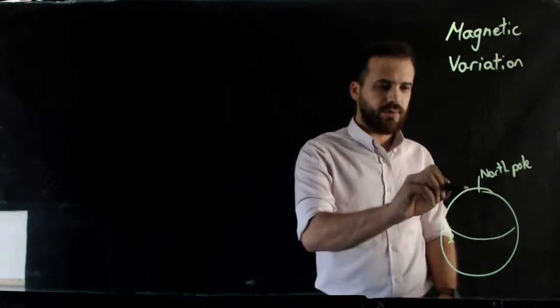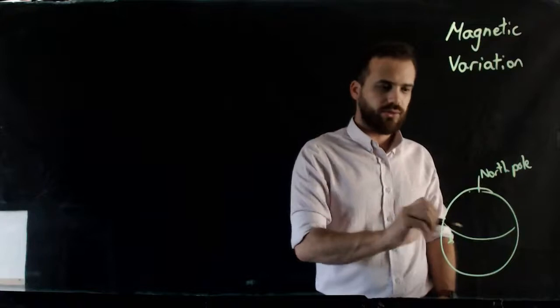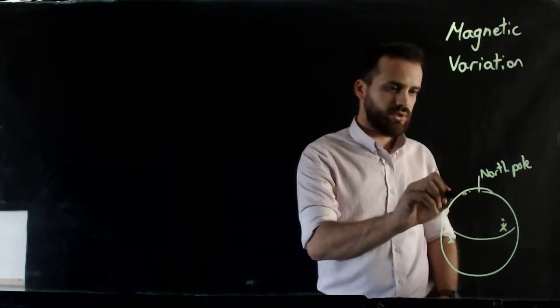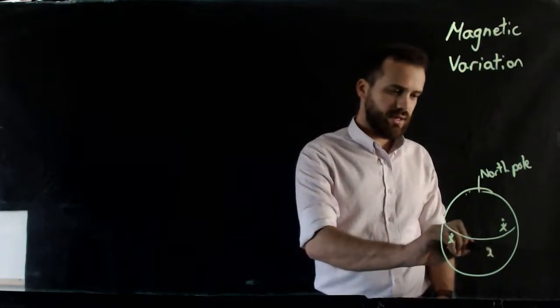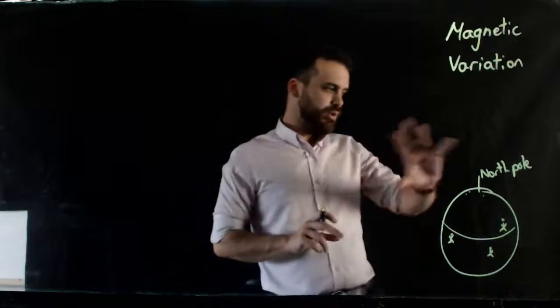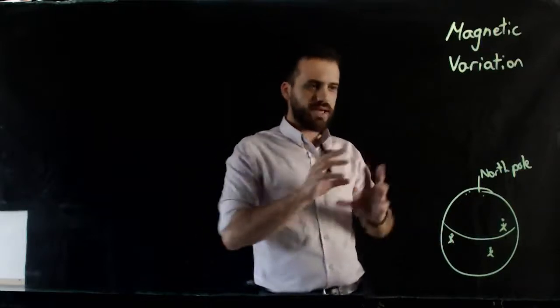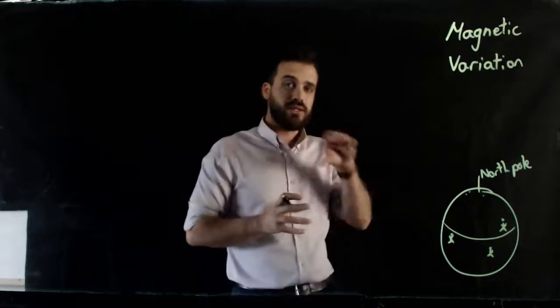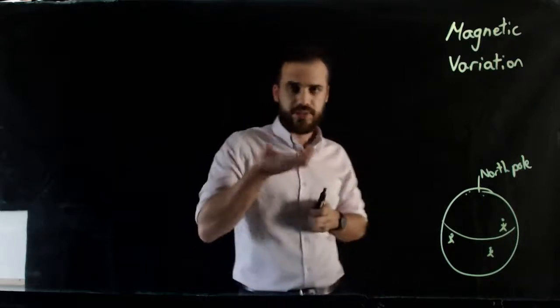It points, well, it depends on where you are in the Earth, but it points somewhere near north, but not quite north. So if I'm standing here, it might point to about this spot here, or if I'm standing over here, it might point to this spot right there, or if I'm standing here, it might point to this spot over here. So we have problems here with magnetic variation. Depending on where you are, different parts of the Earth, compasses behave differently.